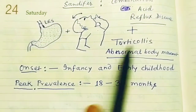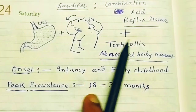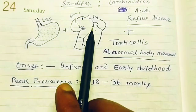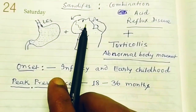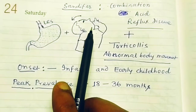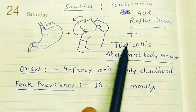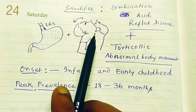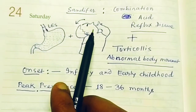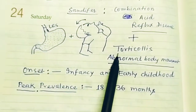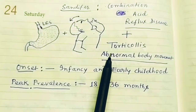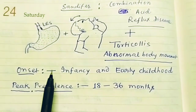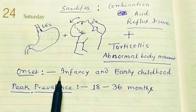Torticollis refers to a stiffening of the neck — specifically, it is the sternocleidomastoid (SCM) muscle that is stiffened, which helps in moving the head to one side. The onset of this disease occurs in infancy and can also be found in early childhood. The pediatric population is primarily affected.